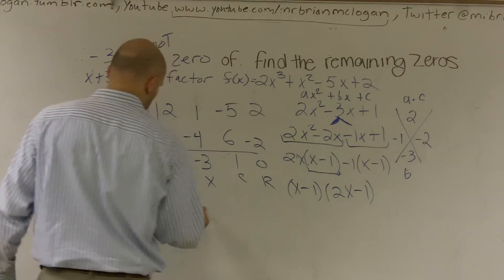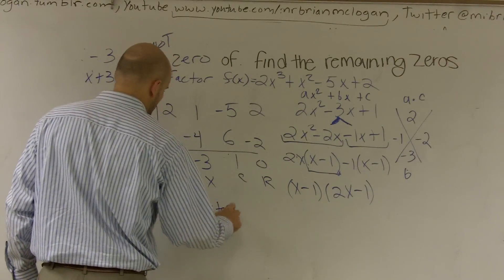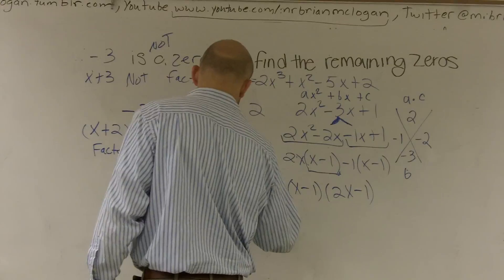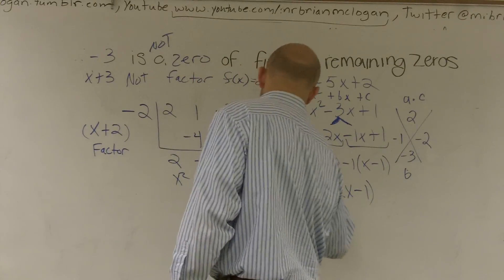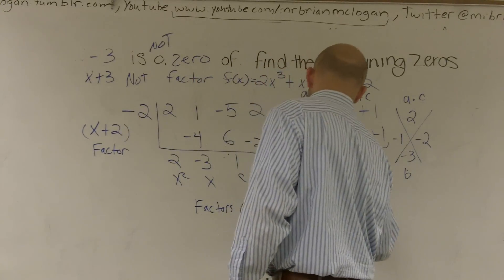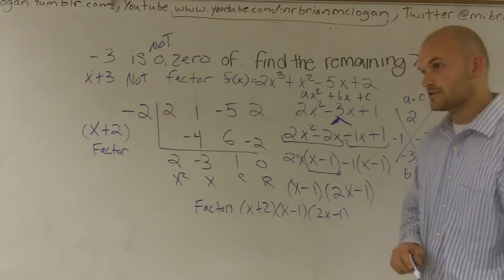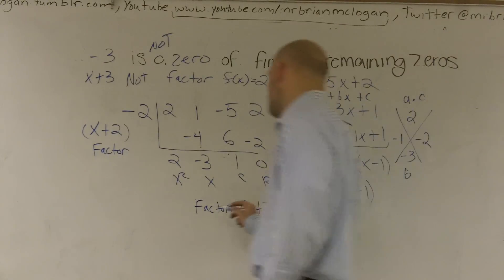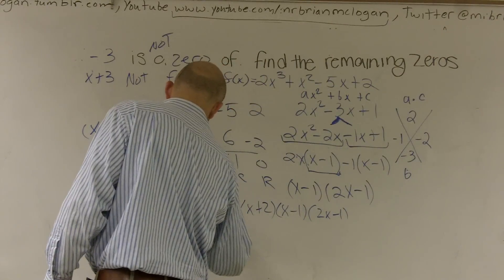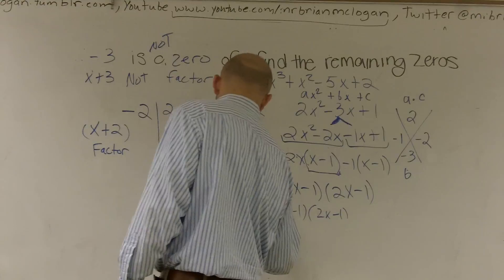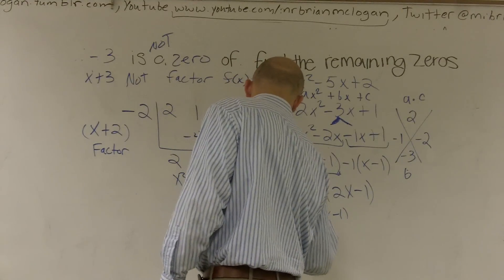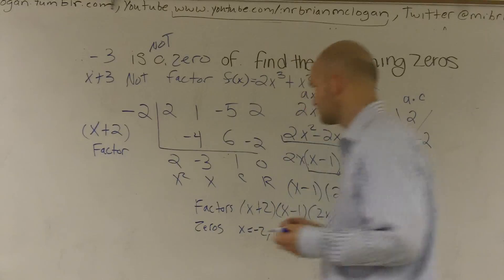However, your zeros, so now all my zeros, so my factors are x plus 2, x minus 1, and 2x minus 1. So therefore, if those are my factors, my zeros, are when you set them equal to zero, are x equals negative 2, 1, and 1 half. That's it.